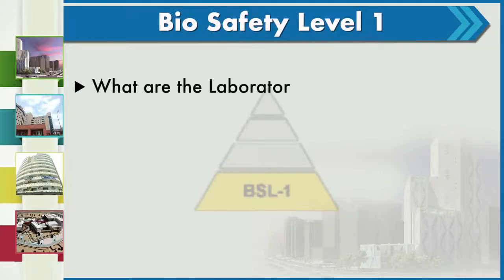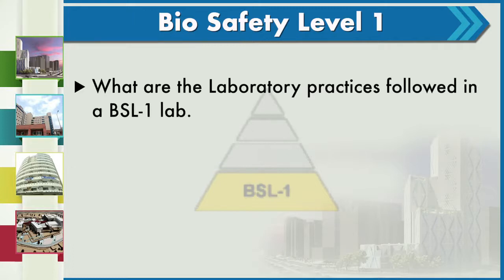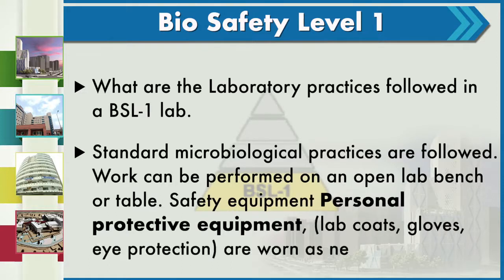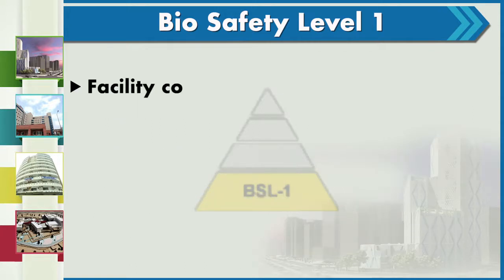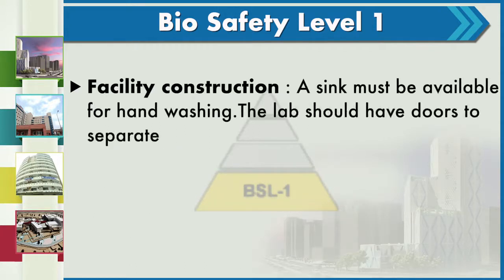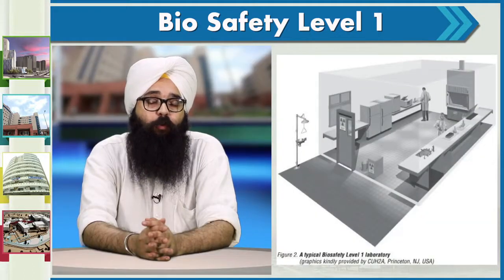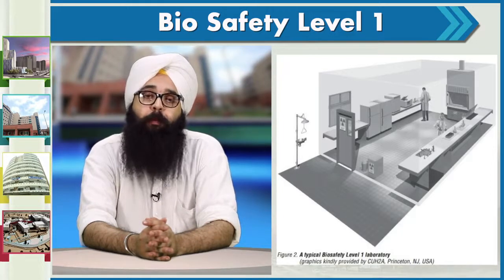In a BSL 1 lab, standard microbial practices are followed and work can be done on an open bench or table. Safety equipment such as personal protective equipment — lab coats, gloves, and eyewear — is still provided. For facility construction, a sink must be available for handwashing and the lab should have doors that separate the working area from the rest of the facility. We are going to share images of how a BSL 1 lab plan looks in the references.